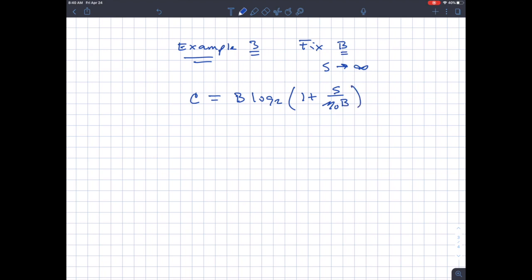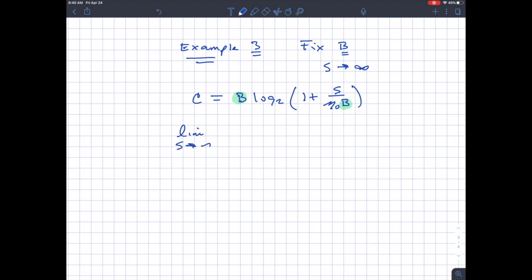And so what we see is C is equal to B log 2 of 1 plus S over n naught B. Well, n naught is a known quantity. It's the signal noise floor for additive white Gaussian noise. And then B is the bandwidth, and that's the thing we're fixing. So B remains fixed, and the only thing that increases is we are looking at limit as S gets really large of C. And so when that happens, as S gets really large, S over n naught B is large compared to 1. So you can say that this would be eventually proportional to B log 2 of S over n naught B.